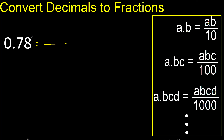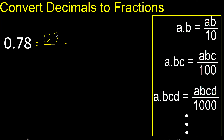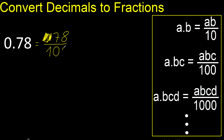First, all the number without point, like this. Eliminate zero on this side — always number one. After the point there are two numbers, therefore two zeros.